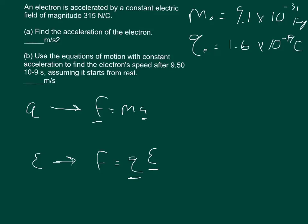So now all I have to do is substitute qE, so I get qE equals ma, and I just divide by the mass of the electron to get the acceleration. So acceleration is equal to the charge times the electric field divided by the mass.